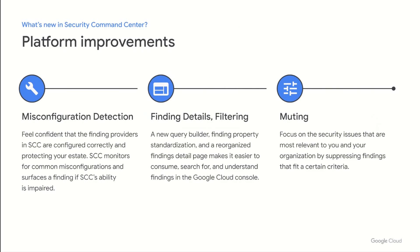Now let's talk about what's new across this functionality. First up, we've released several platform-wide updates that improve the experience across the entirety of Security Command Center. Since you rely on SCC for critical security operations, we've made it easier to understand whether its ability to protect your estate is impaired. If SCC detects that a finding publisher, like Security Health Analytics or Container Threat Detection, cannot produce findings or operate as expected, it will surface a special type of finding along with remediation instructions. We've also significantly improved the experience around consuming findings, standardizing information across different finding types and reorganizing content so they are easier to understand than ever.